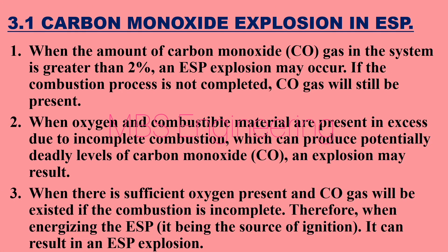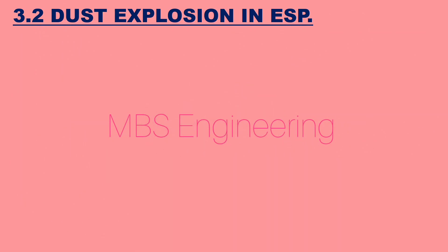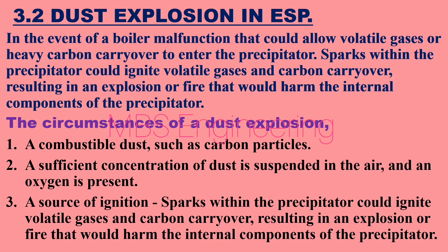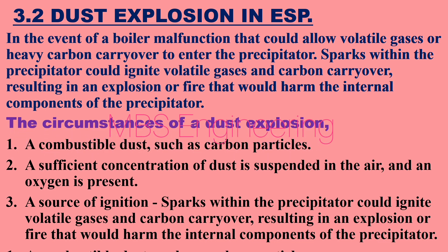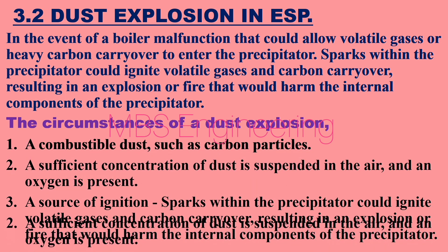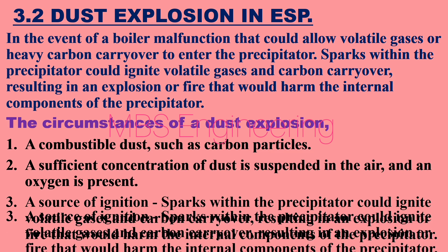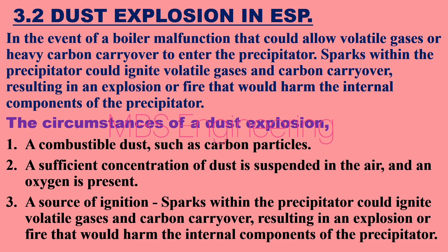Next, we will look at dust explosions or fire in the ESP. Point 1: In the event of a boiler malfunction that could allow volatile gases or heavy carbon carryover to enter the precipitator, sparks within the precipitator could ignite those gases and carbon carryover, resulting in an explosion or fire that would harm the internal components. The circumstances of a dust explosion require: a combustible dust such as carbon particles, a sufficient concentration of dust suspended in air with oxygen present, and a source of ignition.